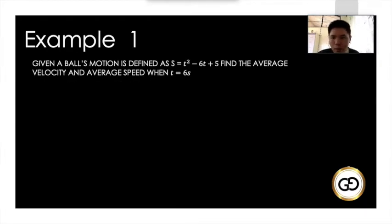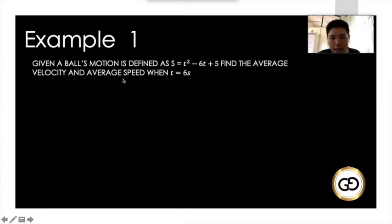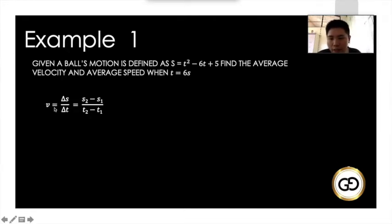Let's look at an example. A ball's motion is defined as s = t² - 6t + 5, where displacement is a function of time. We need to find the average velocity and the average speed when time equals 6 seconds. We plug in the formula: average velocity equals the change in displacement over the change in time — final position minus initial position over final time minus initial time.